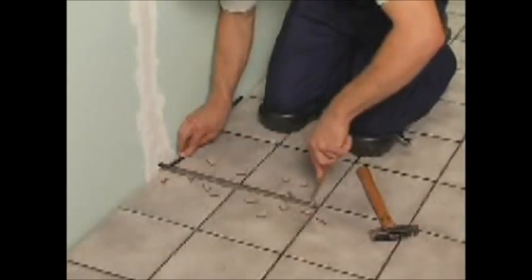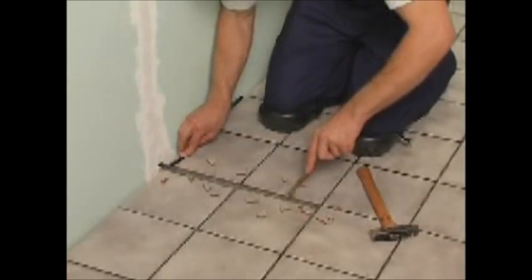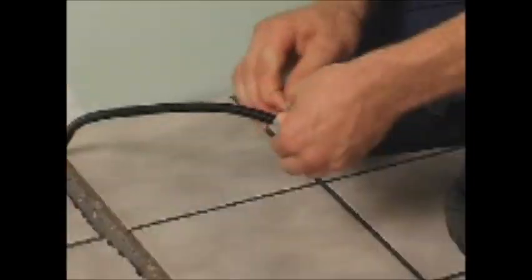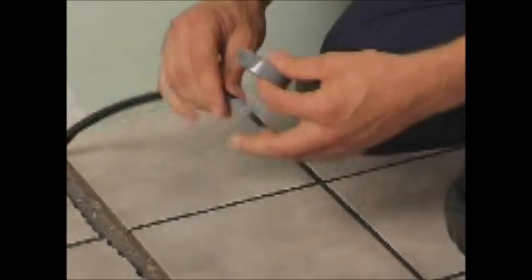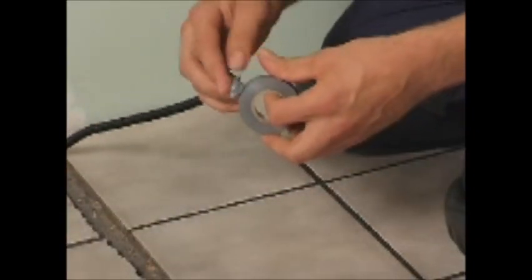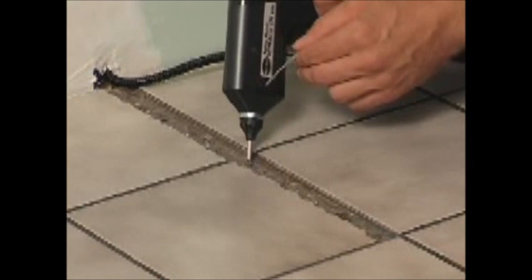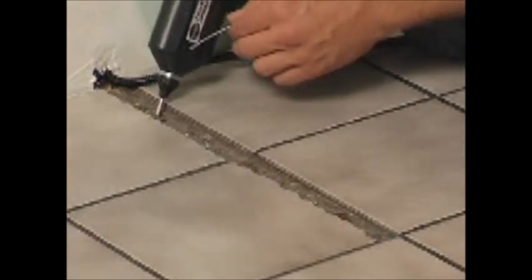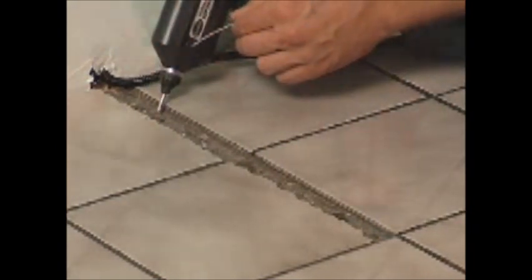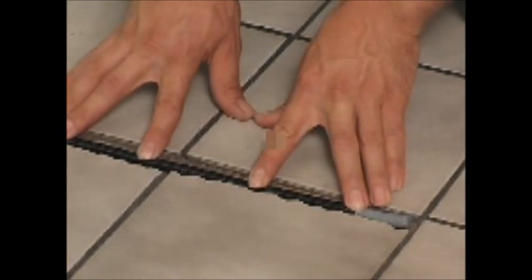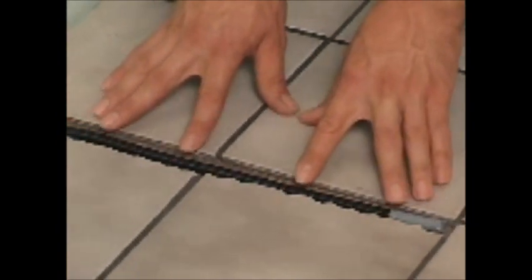Make a groove in the floor for the sensor. Tape up the end of the conduit for the floor sensor with strong tape. Fill the groove with hot melt glue and push the conduit into the groove.